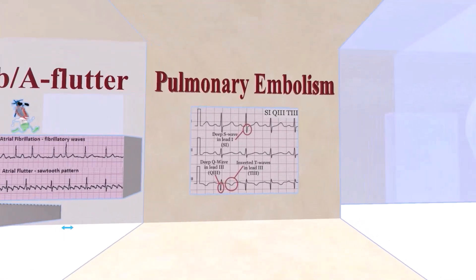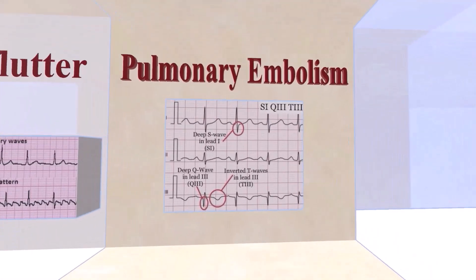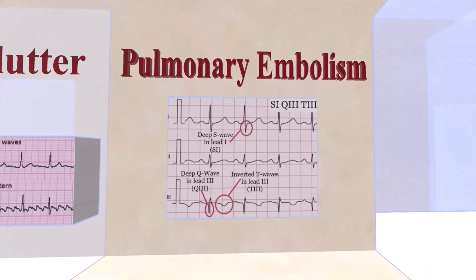Our next room covers pulmonary embolism ECG, which comes up on exams pretty often. There's a pattern described as S1Q3T3: a deep S wave in lead 1, a deep Q wave in lead 3, and an inverted T wave in lead 3.